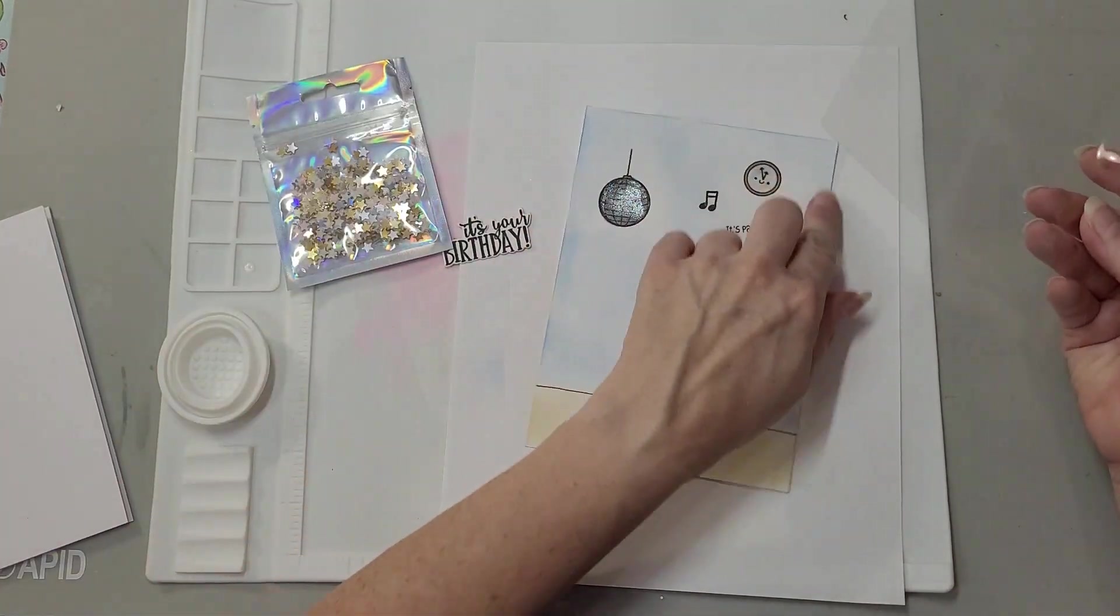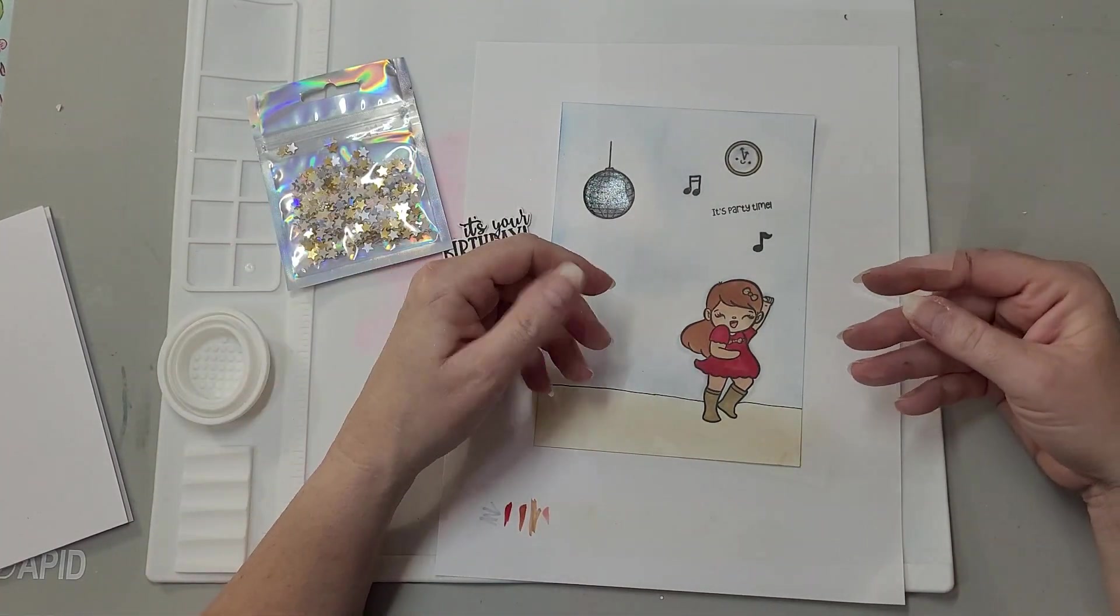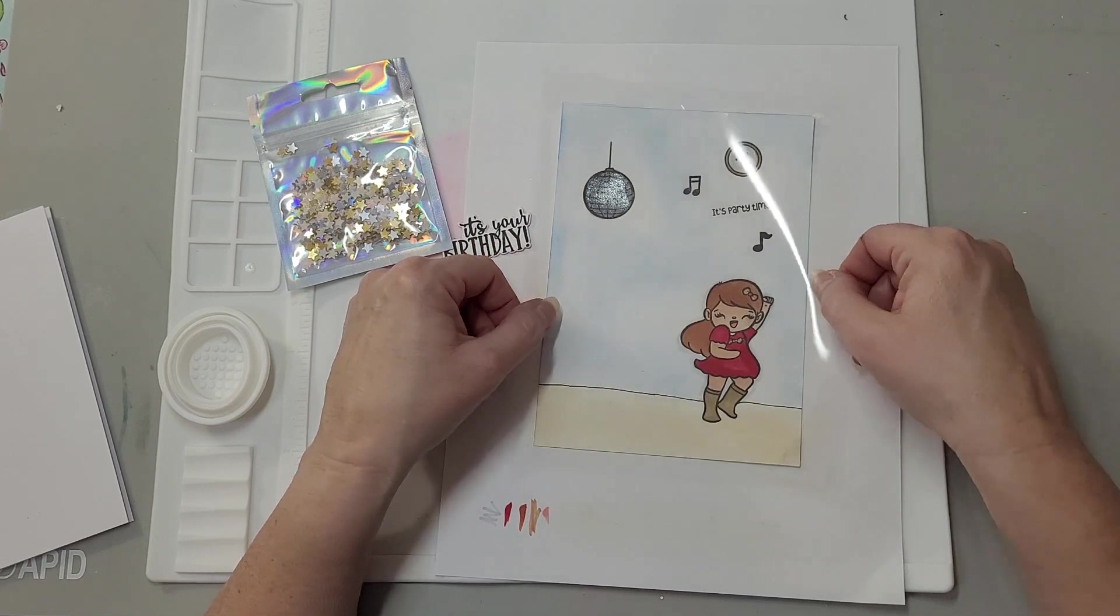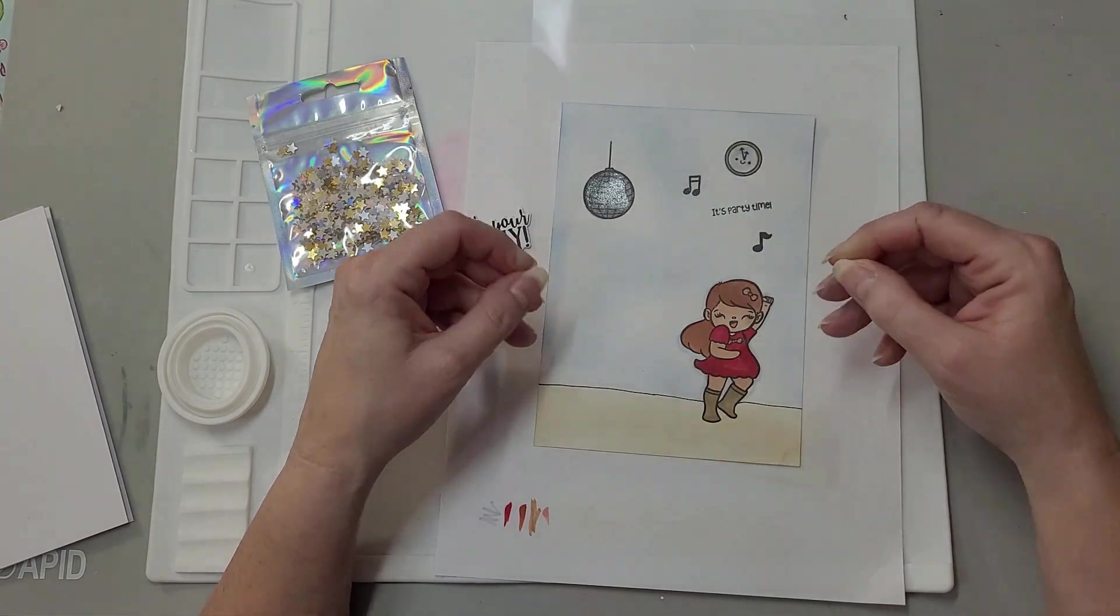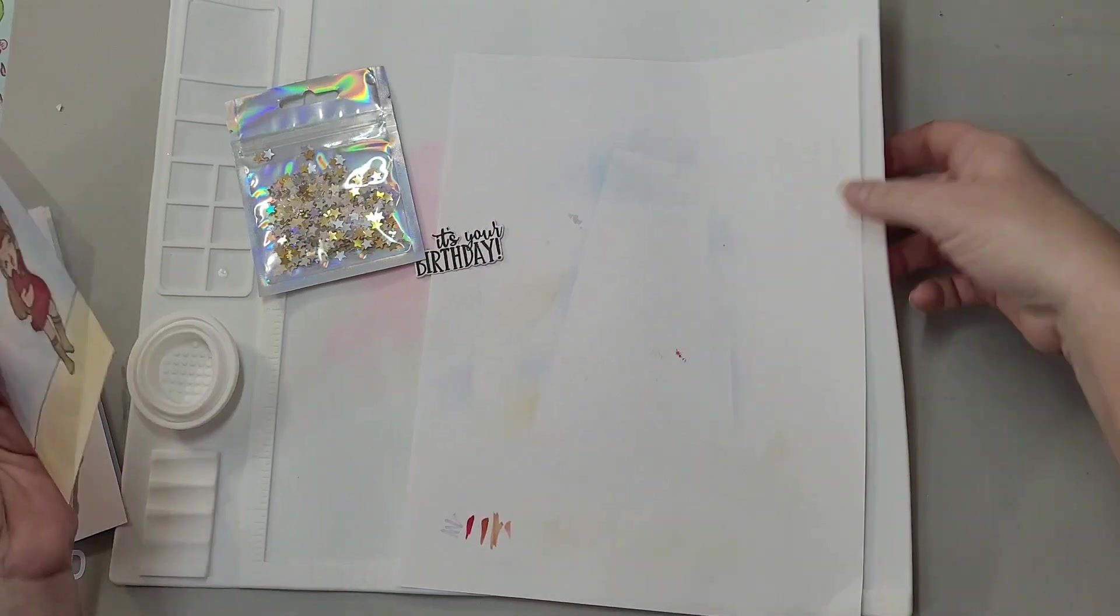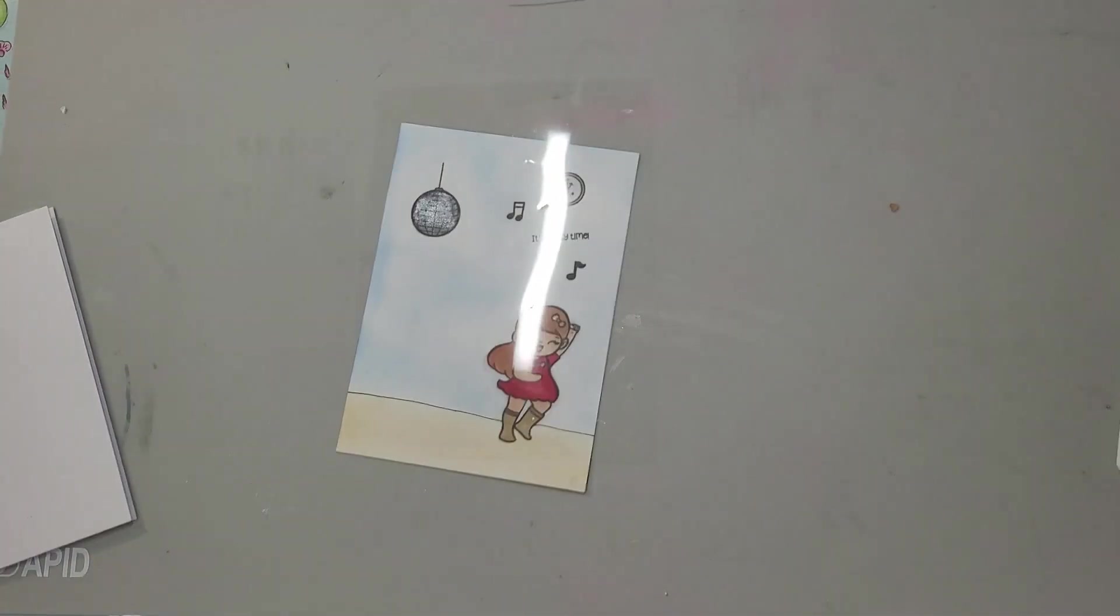Alright, so the card front here is cut at five by seven. So I cut this at six by eight, so I have a half an inch all the way around. So I'm going to score this. Let me grab my scoreboard.